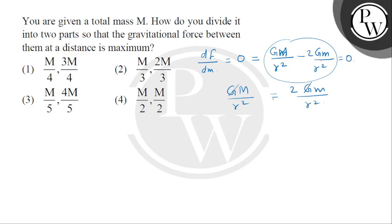So, capital G, capital G cancel, r square, r square cancel. So, we'll get the mass value, half of the total mass given.